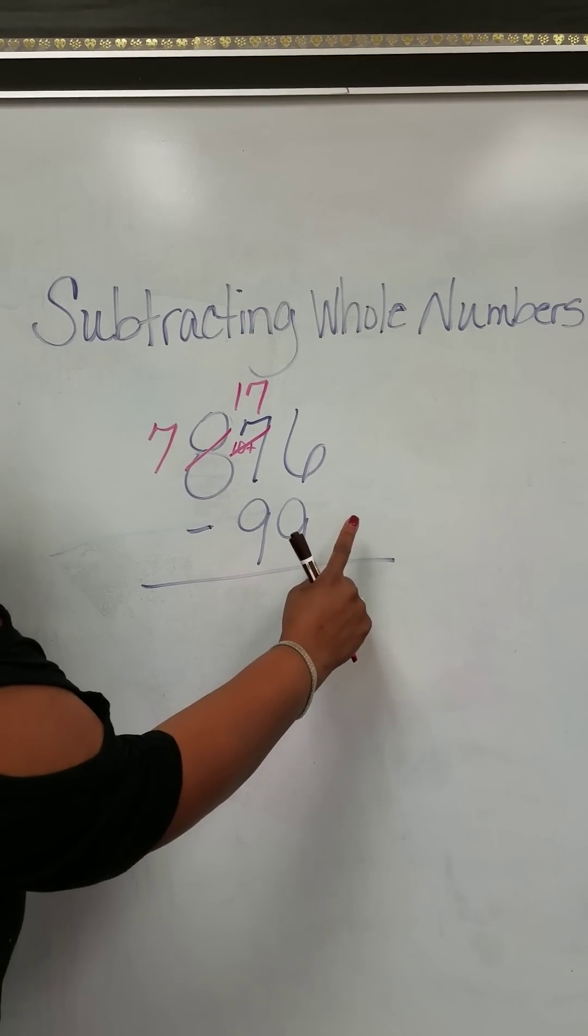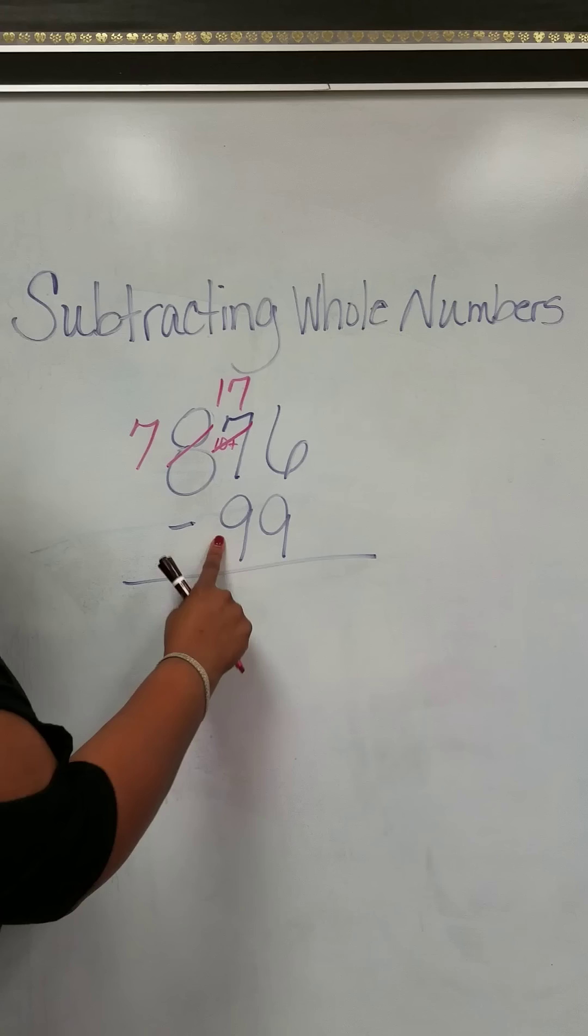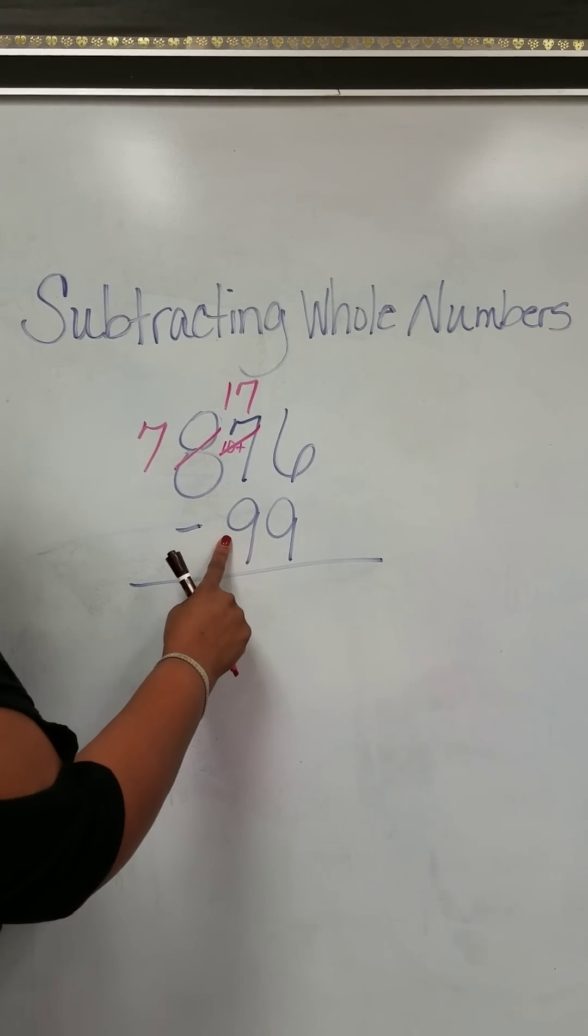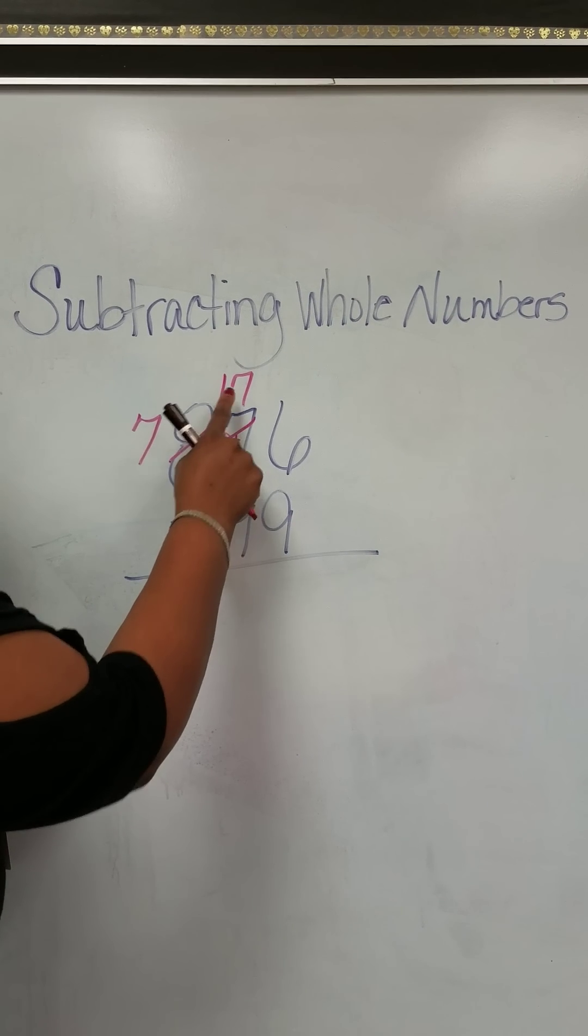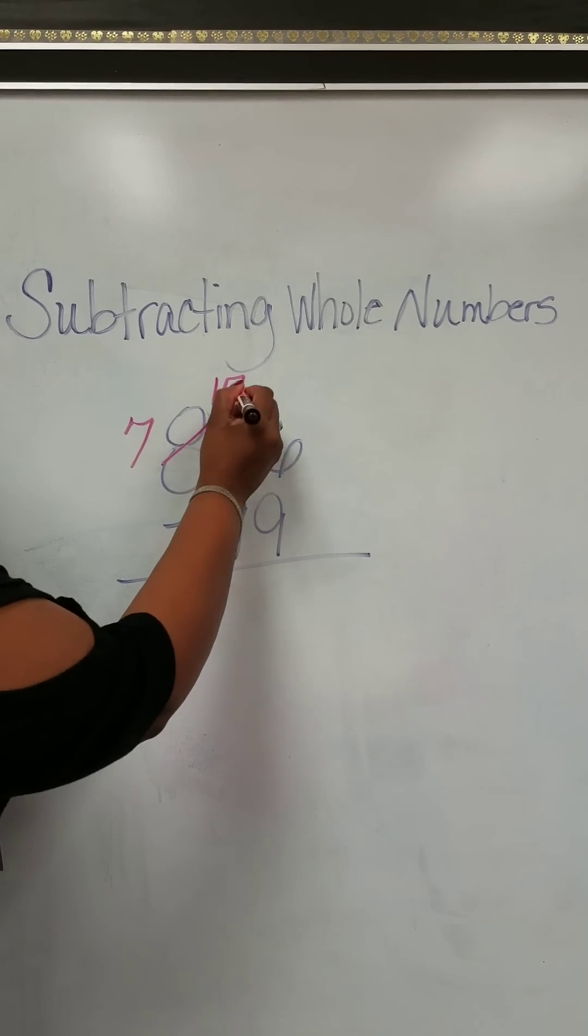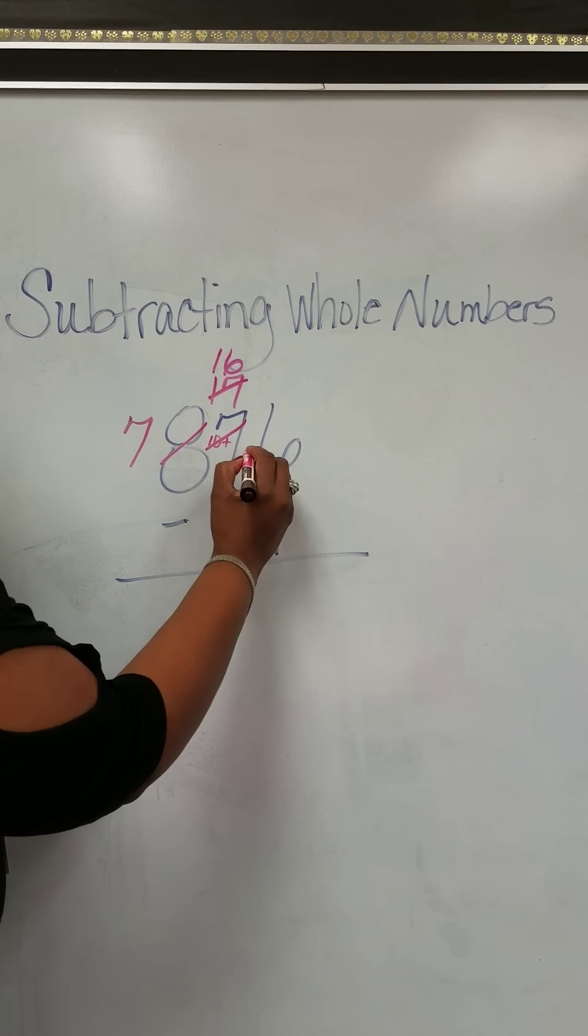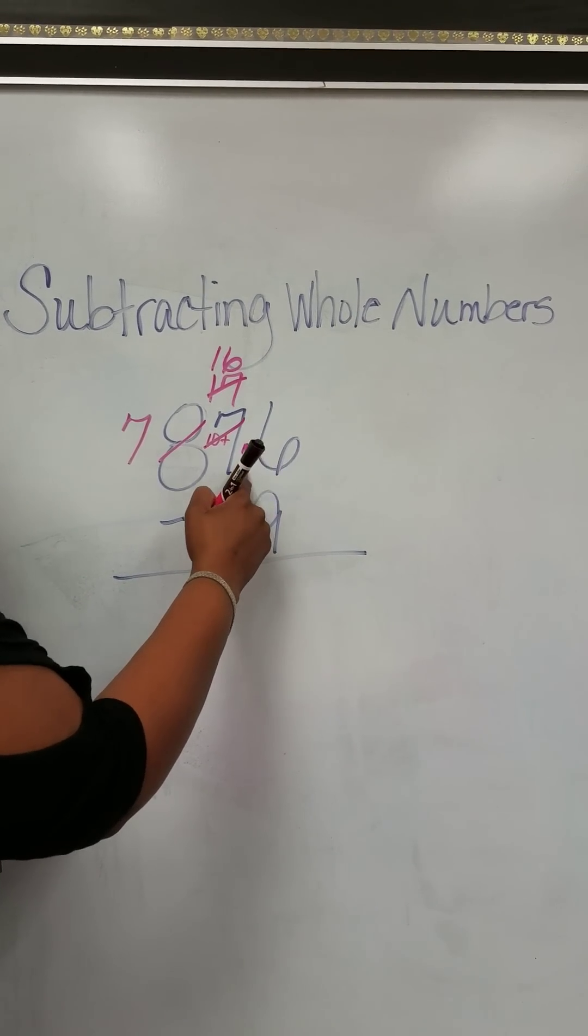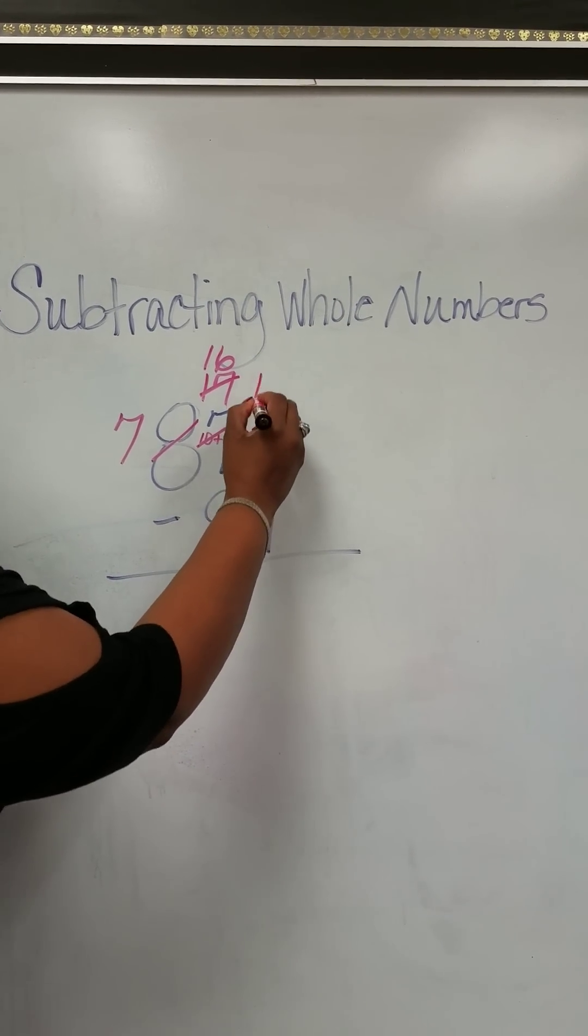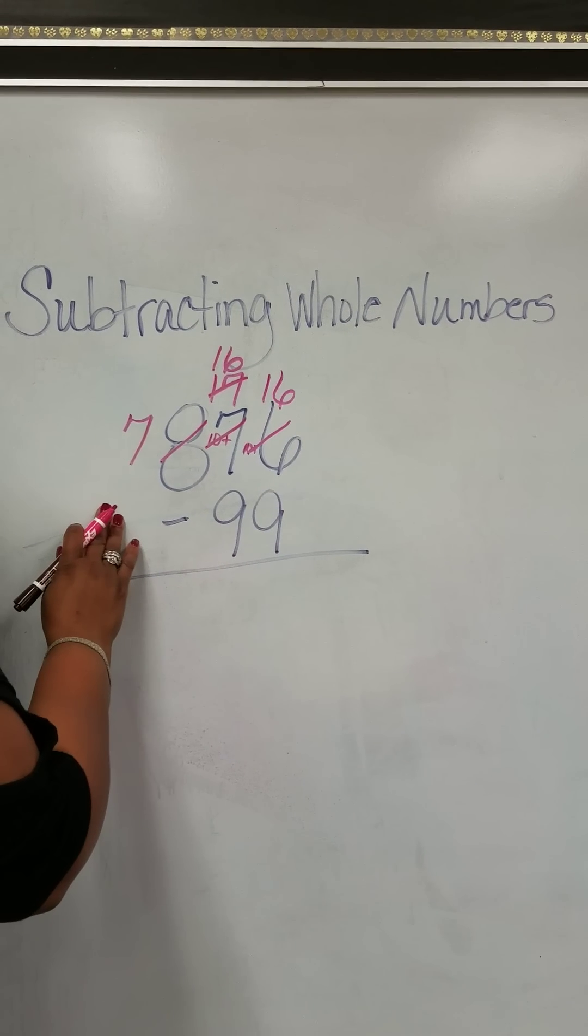Now we have more on the floor, so we have to go next door to grab 10 more. We have 17 instead of 7, so we can grab 10 more. That becomes 16. We add 10 to the 6. 10 plus 6, that becomes 16. Now we can subtract.